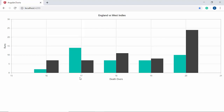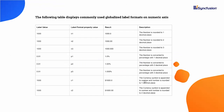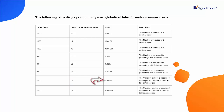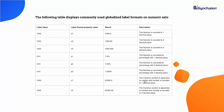The next important property is labelFormat, which lets you make the axis label convey more information. You can set either the default globalized label format or customized formats. For example, if I set the label format to 'c1' on a particular axis, a currency symbol will be appended to the axis values and those values will be rounded to one decimal point.